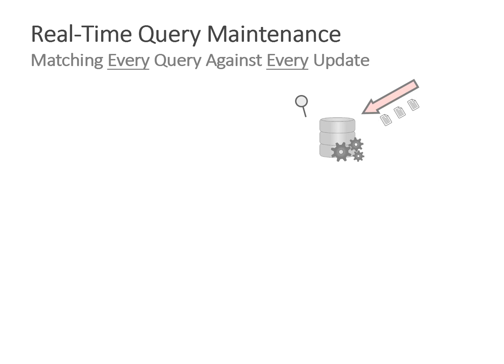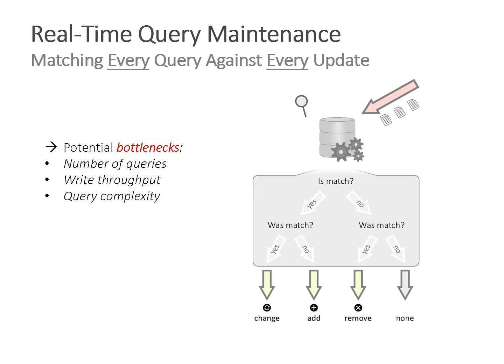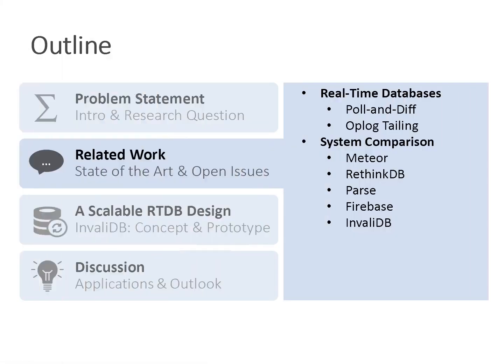The problem with real-time queries is that they are very resource intensive. Consider a single real-time query and a single update operation hitting your database. You need to determine whether the item matches the query now and whether it matched before the update occurred, then deduce whether the result changed, an item was added, or an item was removed. Depending on the number of active queries, write throughput, and query complexity, matching every query against every update can become prohibitive — which is why triggers, event-condition-action rules, and materialized views are also very expensive for database systems.